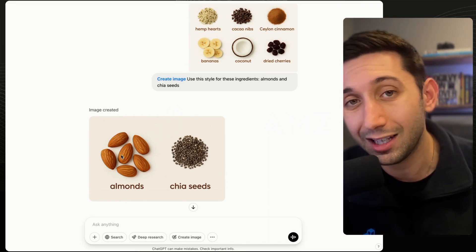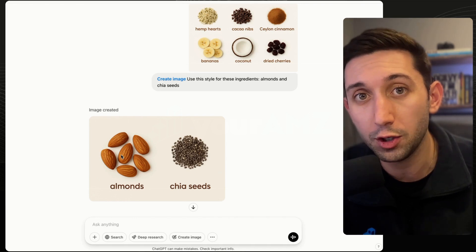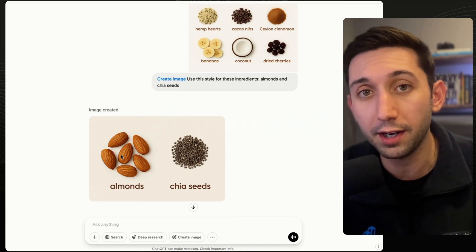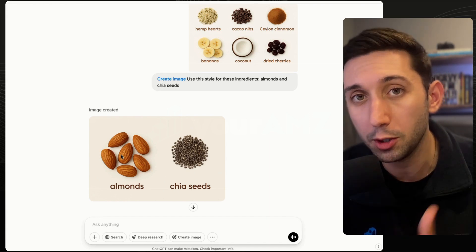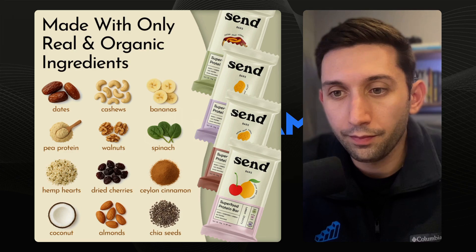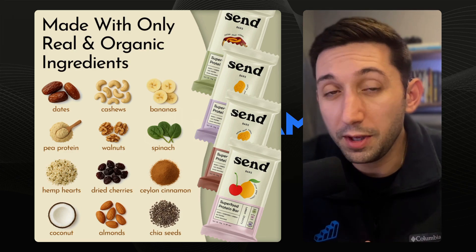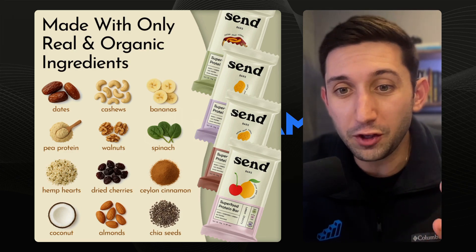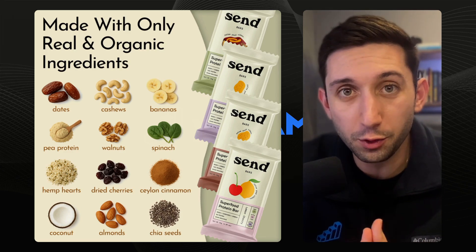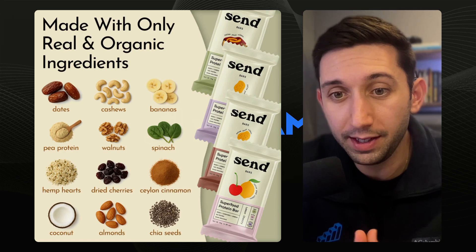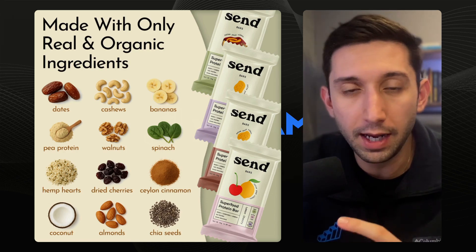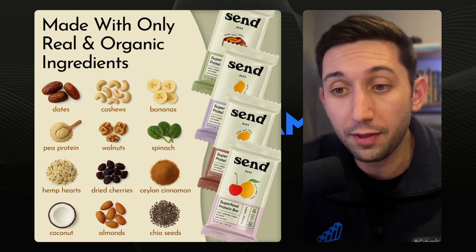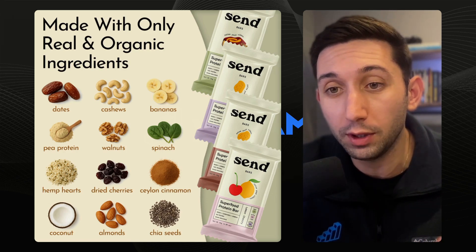I took all of that visual information — the images — and pulled it into Photoshop. Let me show you the image I created. This is going to be the first supporting listing image, and as you can see, I've used those visuals that ChatGPT helped me create, pieced them together in Photoshop, and made what I think is an incredible listing image.